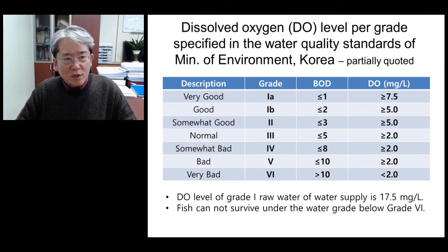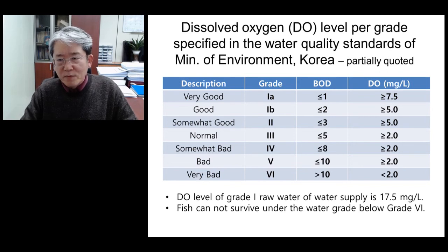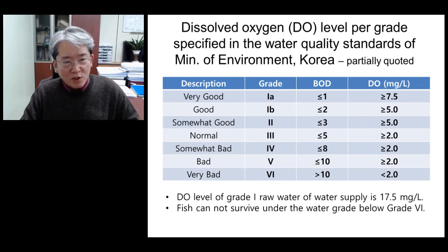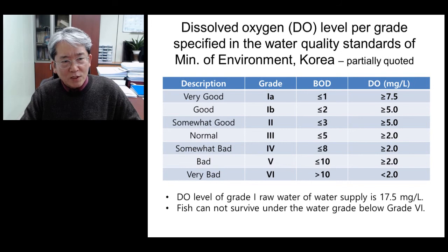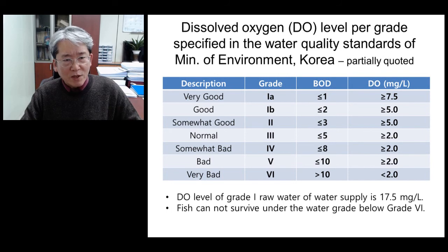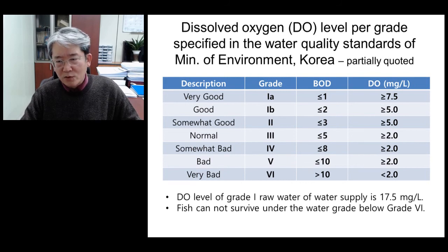If we look at the water quality standard, one of the important factors that determines the grade of water is the dissolved oxygen level. For each grade, the corresponding range of dissolved oxygen level is specified. Based on this information, DO levels of 2.0, 5.0, and 7.5 mg per liter are used to classify the water grades, suggesting a suitable range of DO level.